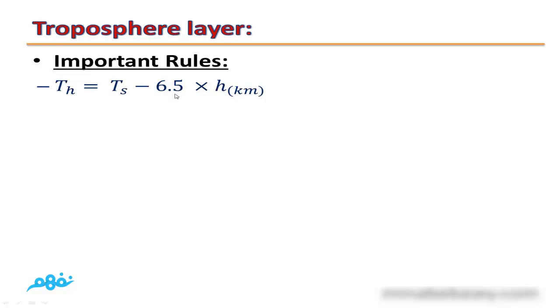This is because the temperature decreases in the troposphere by the rate of 6.5°C for each 1 kilometer height.